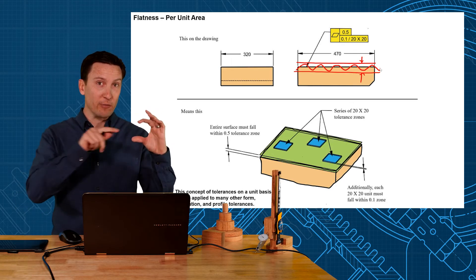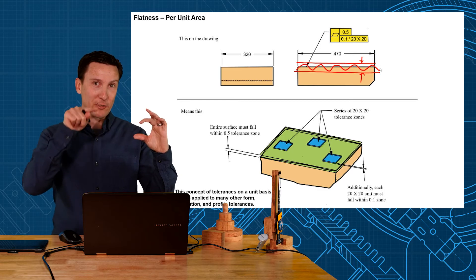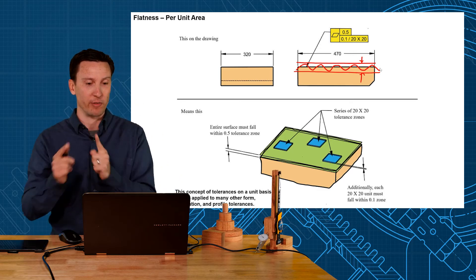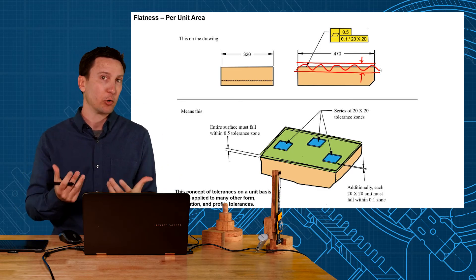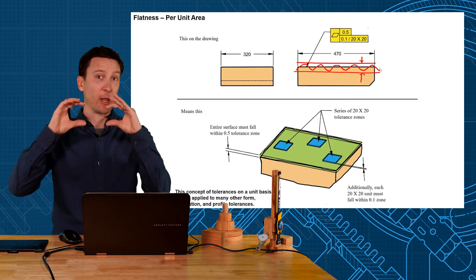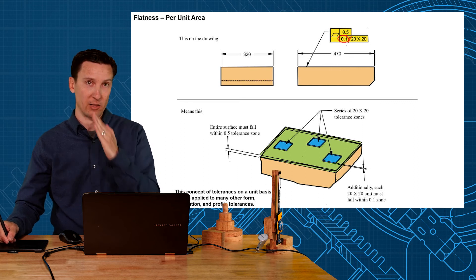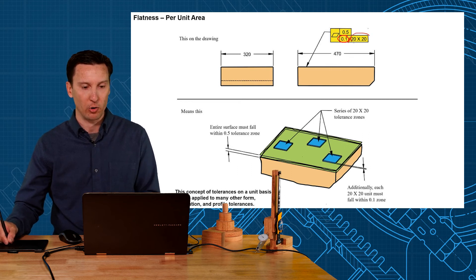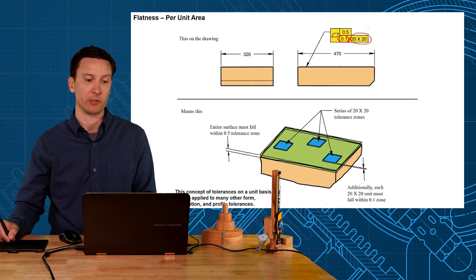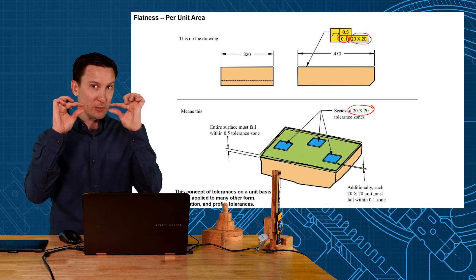So they apply it on a per unit basis to refine that overall flatness. So now you have a flatness of 0.1 per, that slash means per, and then per every 20 by 20 millimeters. This creates a series of 20 by 20 tolerance zones that have a smaller distance between them, 0.1, and those are going to be floating inside of the bigger tolerance zone of half a millimeter.